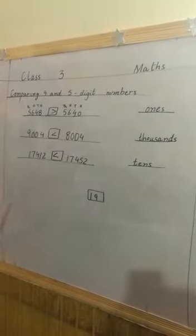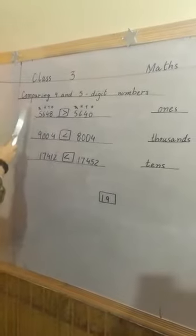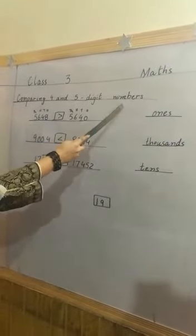Good morning children, how are you all? Class 3 subject maths. Today our topic is comparing 4 and 5 digit numbers.